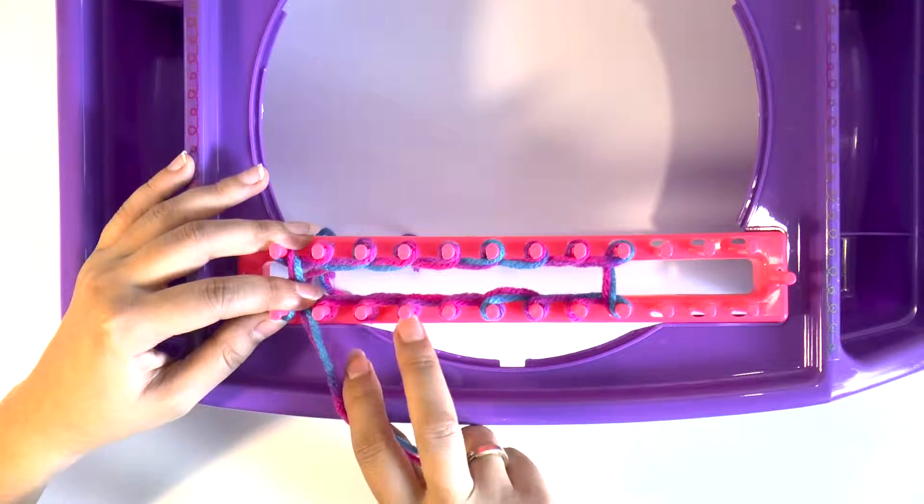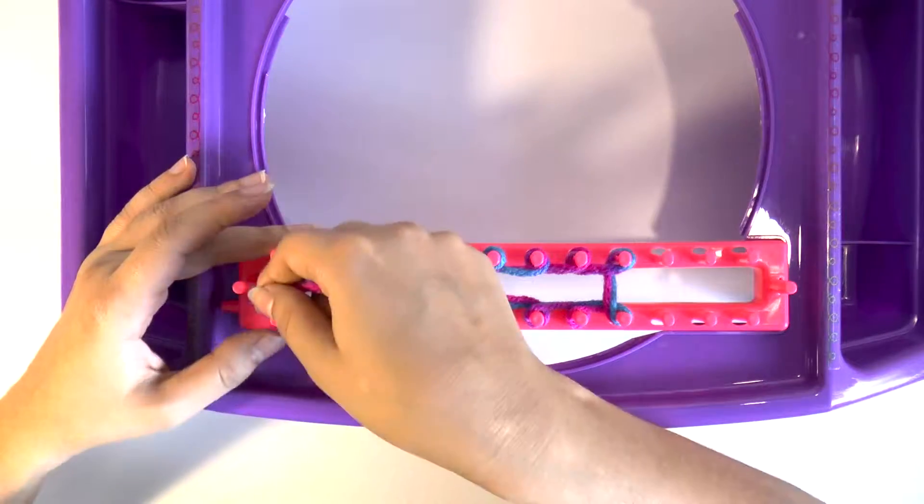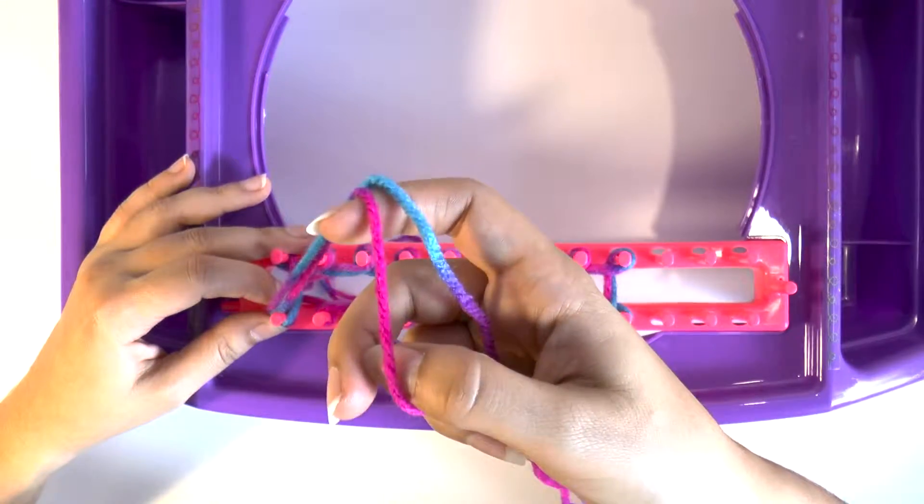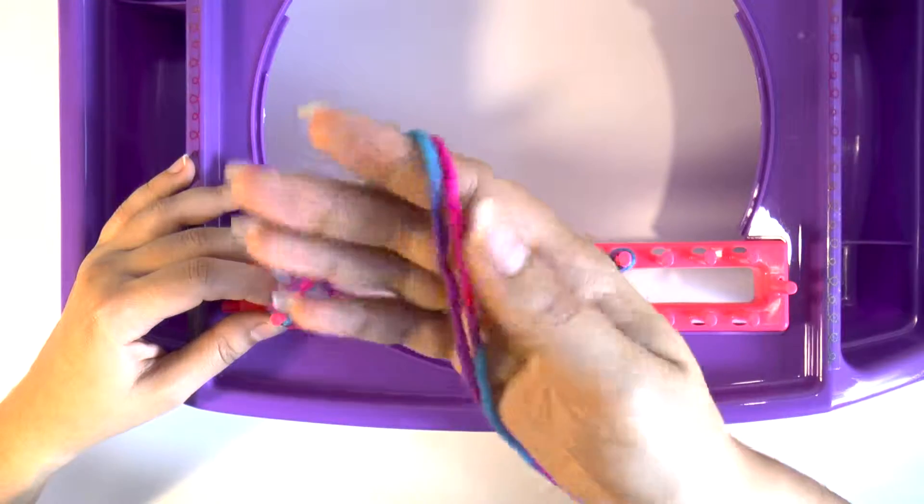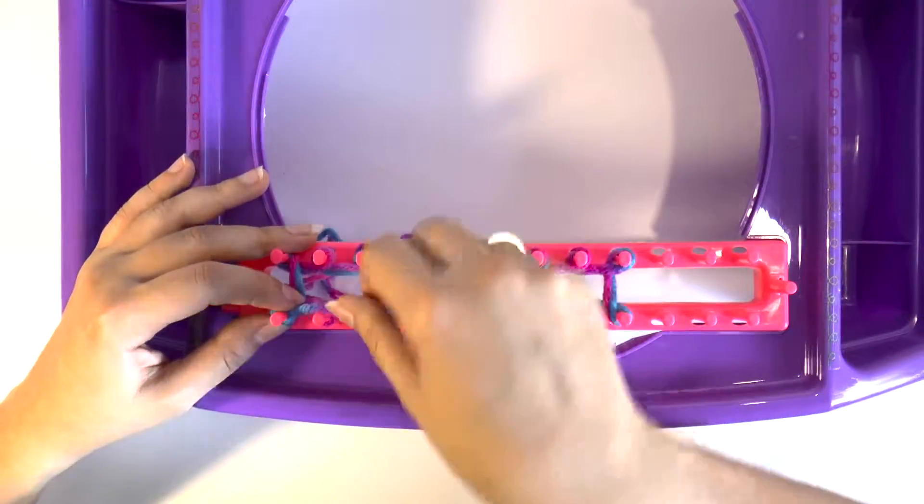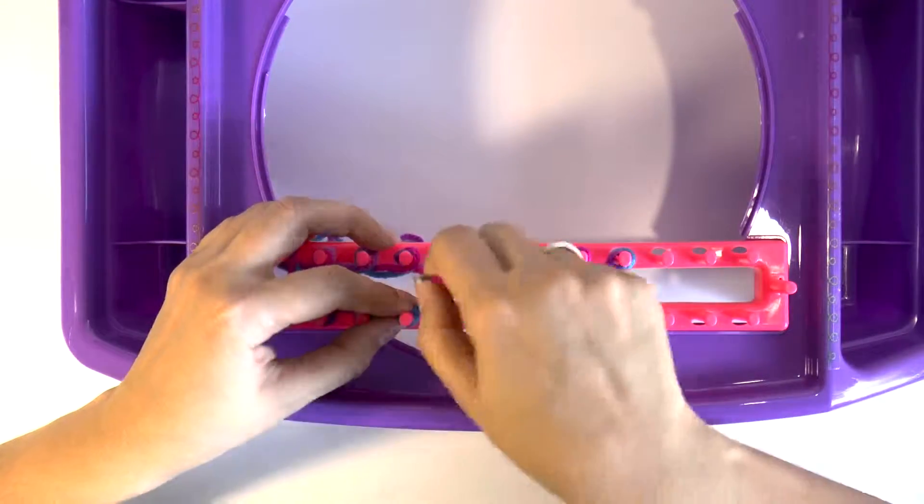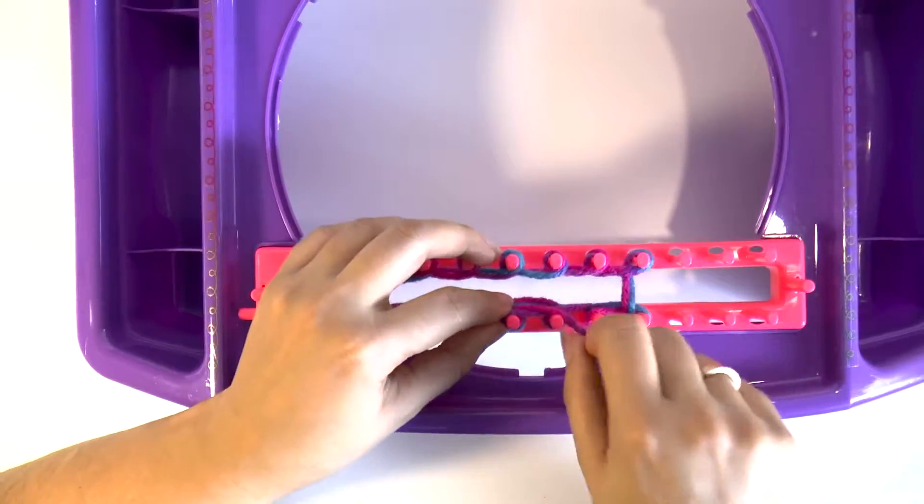Okay, I have one knot on each peg and now I'm going to make a second one. I'm using two threads because I love this thread, but it's a bit too small for me, so I like to use two to make it a little bit better.